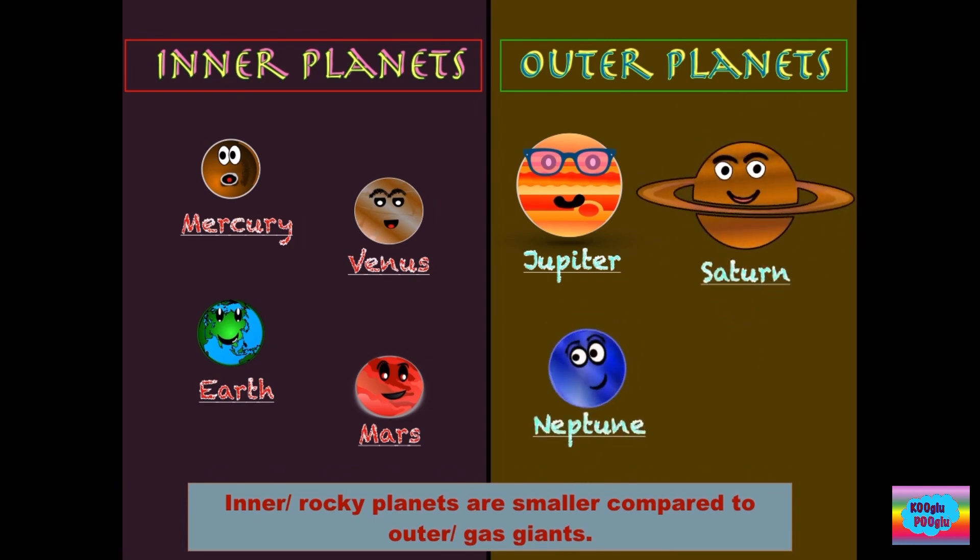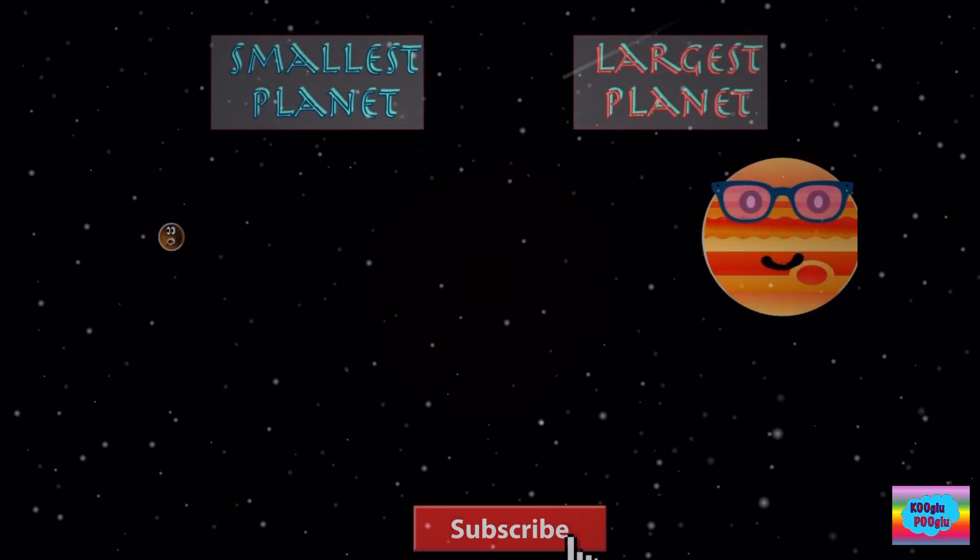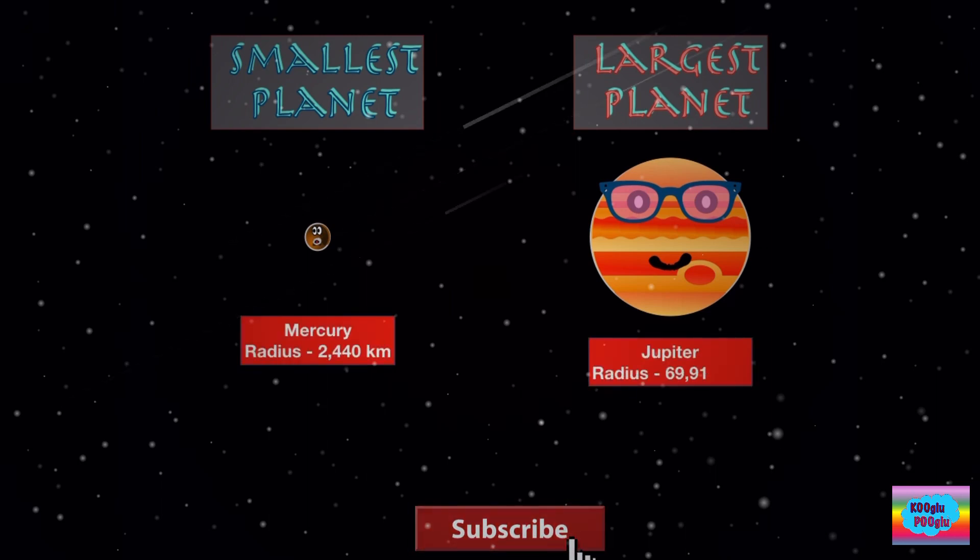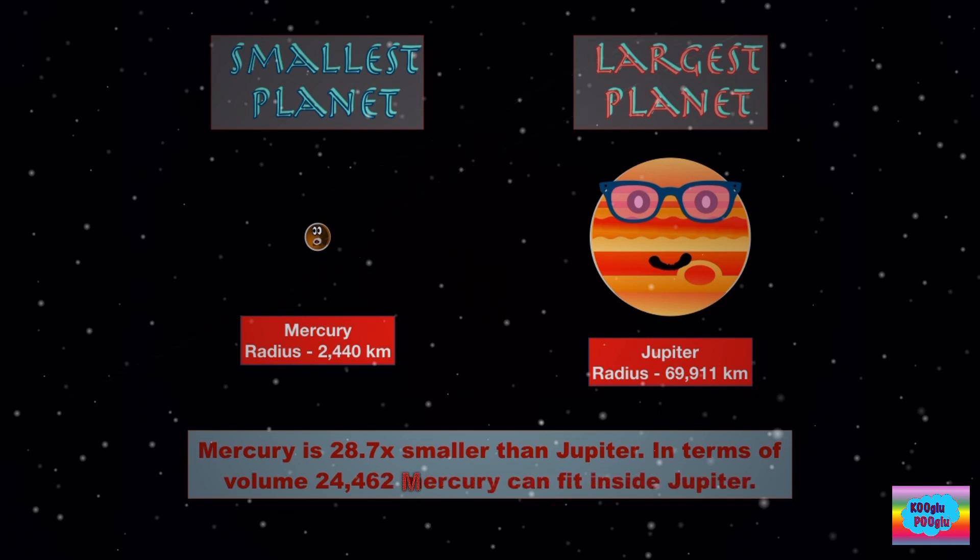Here we have our smallest planet and largest planet. Mercury with the radius of 2,440 kilometers and Jupiter with the radius of 69,911 kilometers. Mercury is 28.7 times smaller than Jupiter. In terms of volume, 24,462 Mercurys can fit inside Jupiter.